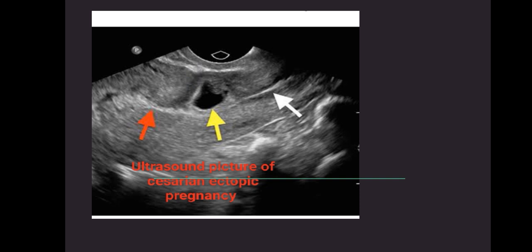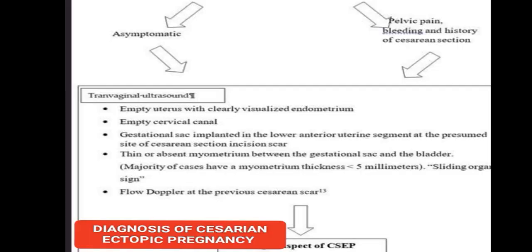This is an ultrasonographic picture of Caesarean Ectopic Pregnancy. Regarding the diagnostic criteria, on transvaginal ultrasonography we will see an empty uterus with a visualized endometrium, an empty cervical canal, and the gestational sac implanted in the lower anterior uterine segment at the presumed site of the Caesarean section scar. Because it invades the myometrium, there is thinning or absence of the myometrium between the gestational sac and the bladder.